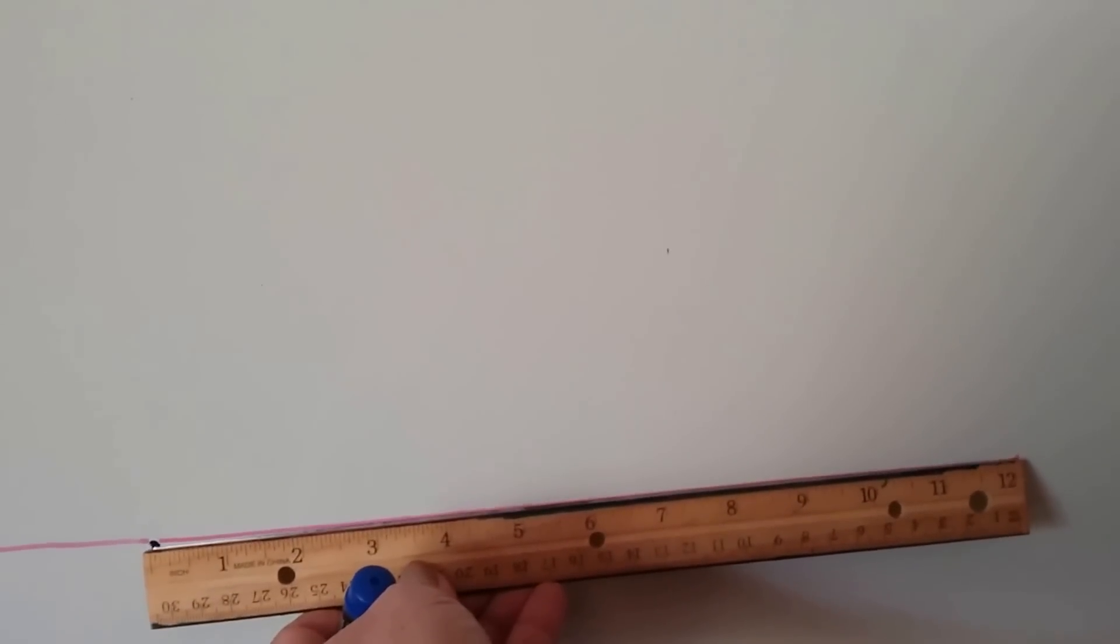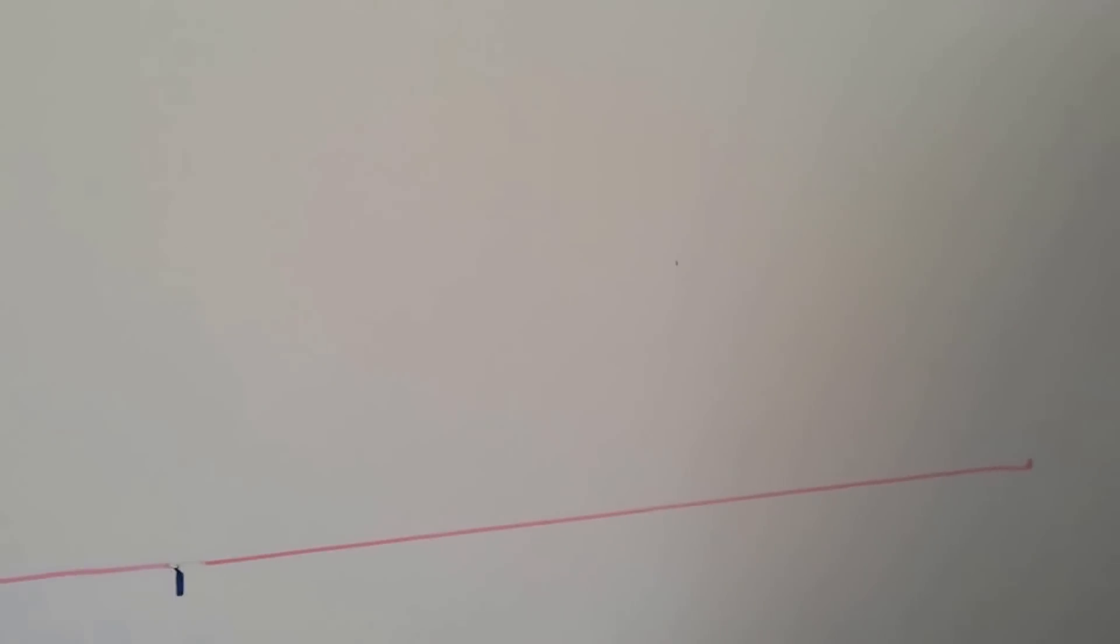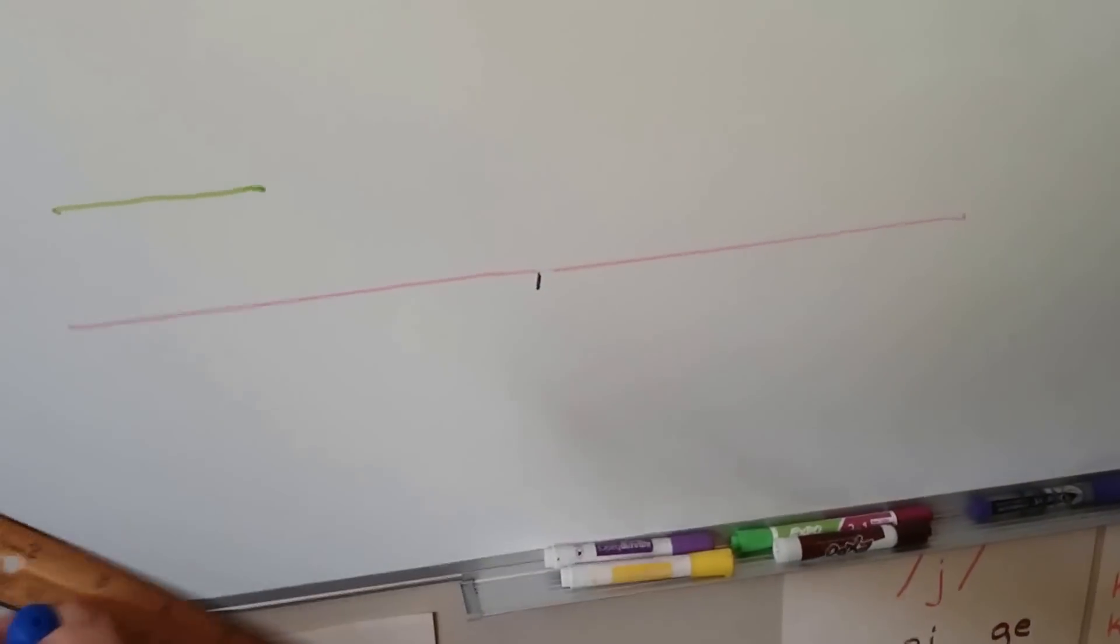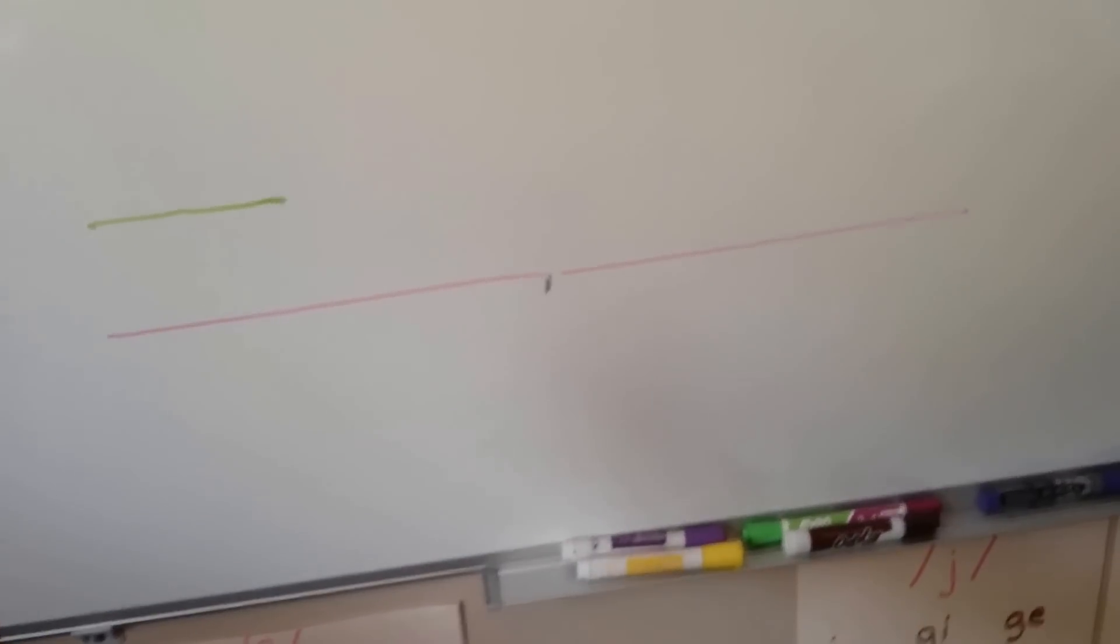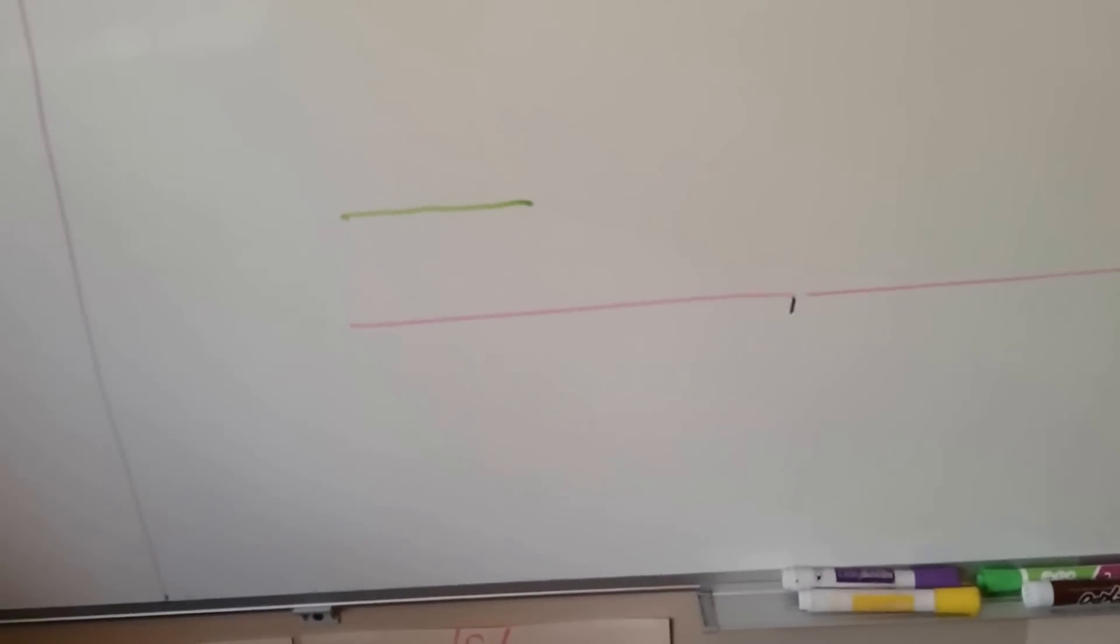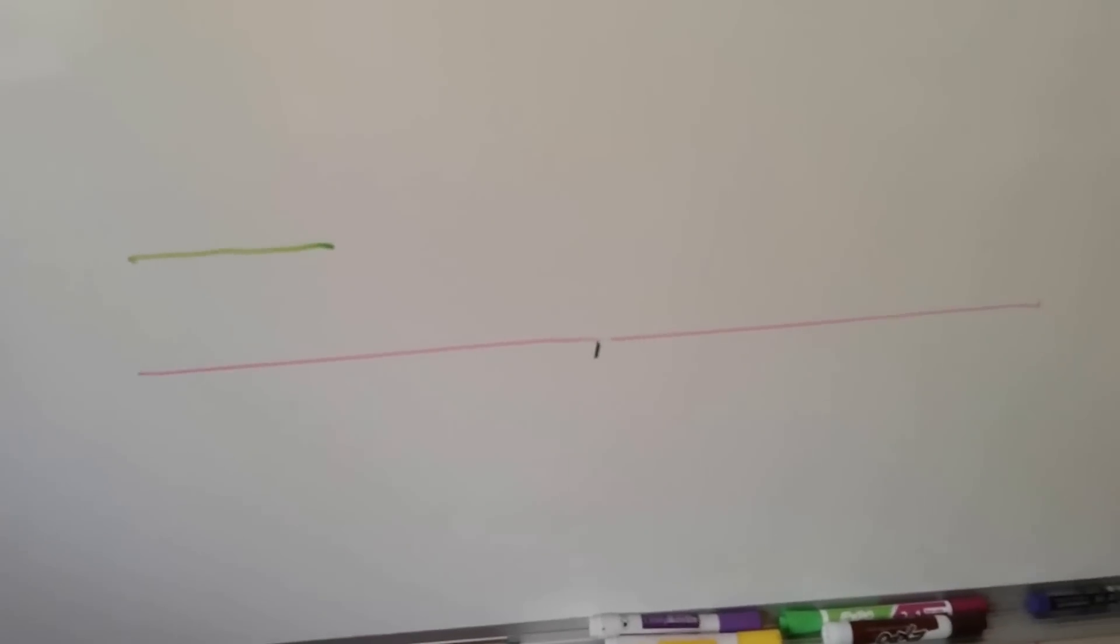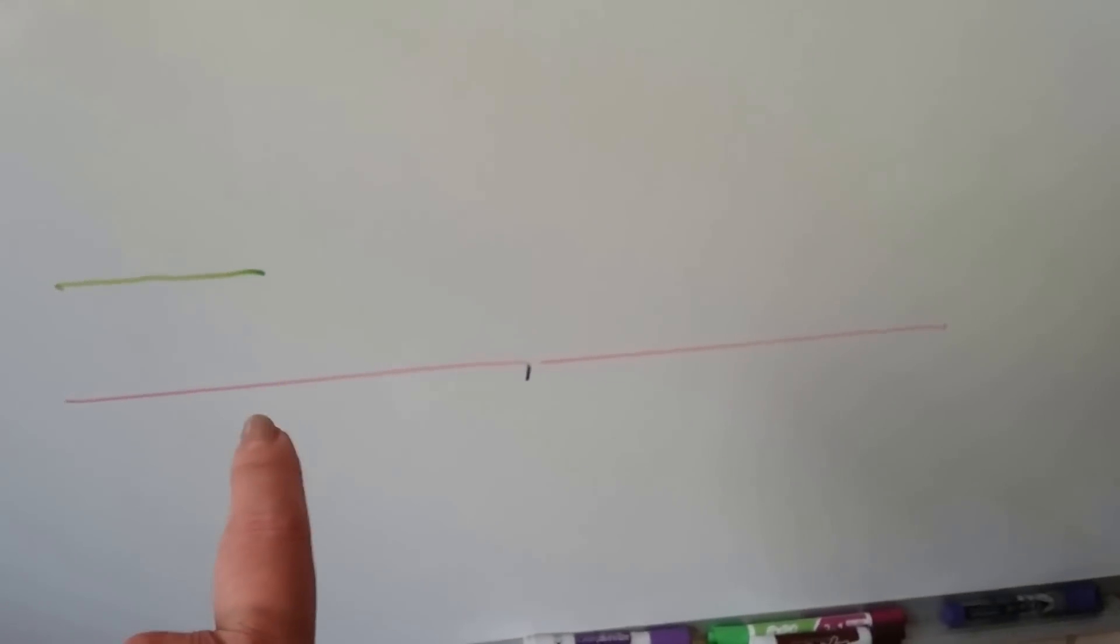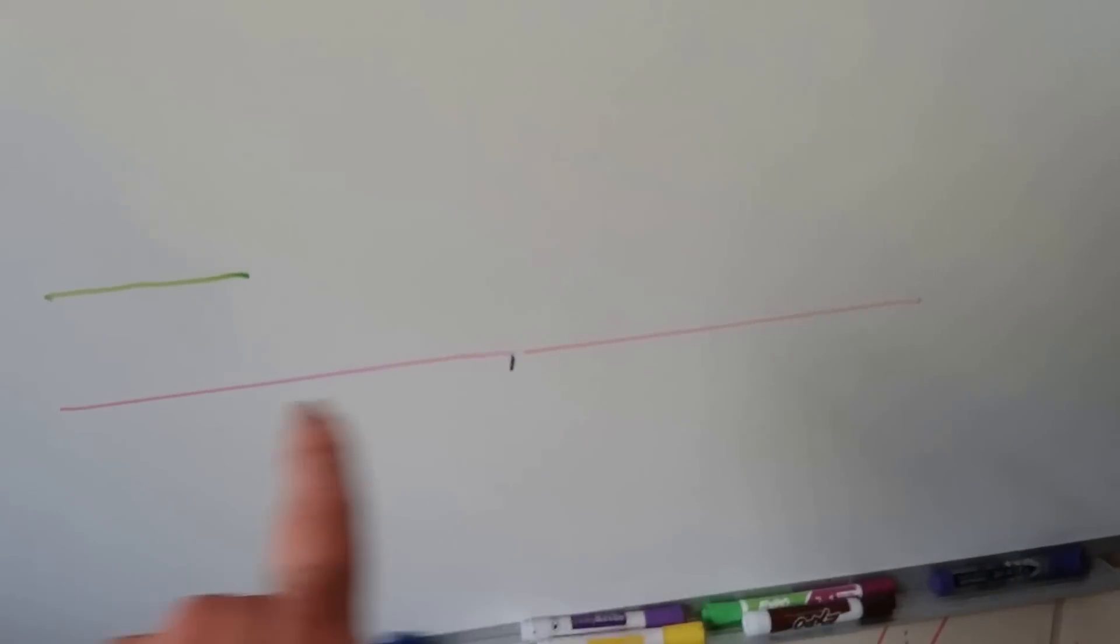It was two rulers. It was 12 and 12. So, even though this line was longer than my ruler, all I had to do was put my ruler, put a mark, and then put my ruler again to measure. So, that line is two feet long because each ruler is 12 inches. That's one foot. So, that's five inches and that's one foot and that's one foot. The whole line is two feet.